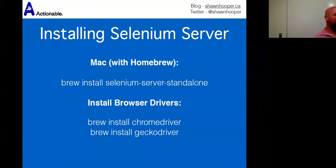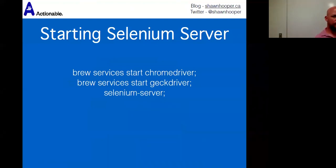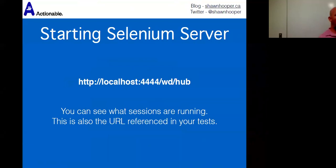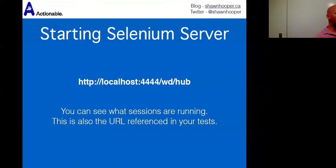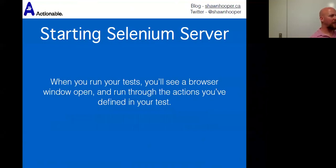After you have your server side and browser drivers running, you start them and have a listener on port 4444 of localhost by default. Going to that URL shows all browser sessions currently active. When you run tests locally, you'll actually see the browser open, navigate your page, and click things in real time. In Chrome, a banner appears saying 'This browser is being controlled by automated testing.'